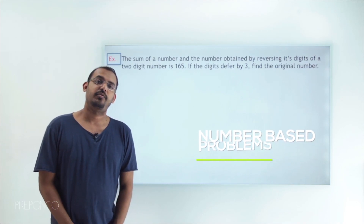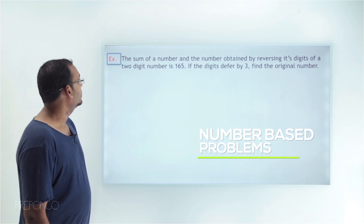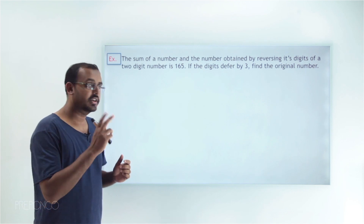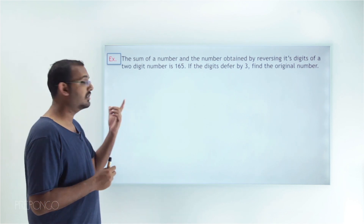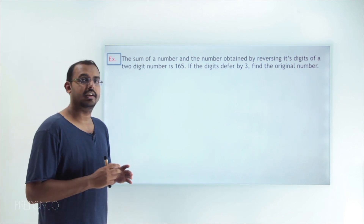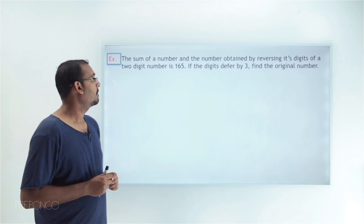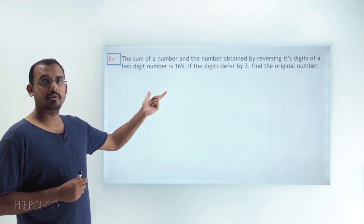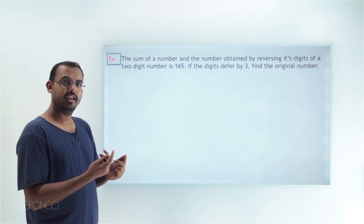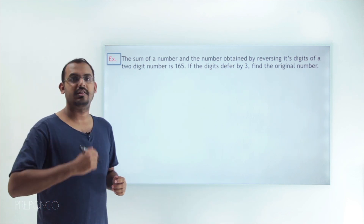Now let's move on to the second question, which is a real world problem based on numbers. In this question, we are told that this is a two digit number, and the sum of the number itself and the number obtained by reversing its digits is 165. One more piece of information is given: if we subtract the digits individually, we get the value 3. We have to find the original number.